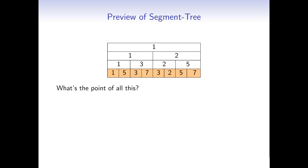What's the point of all this? Well, the value of a node tells us the minimum value of all the nodes underneath it — so it tells us the minimum value of a range in the original array. For instance, the root node has a value of 1, meaning the minimum of the complete array is 1. The right child node has a value of 2, meaning the minimum of the right half of the array is 2. We can use this information to effectively perform both operations.